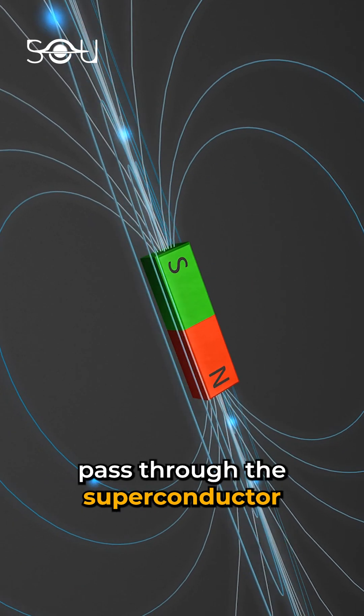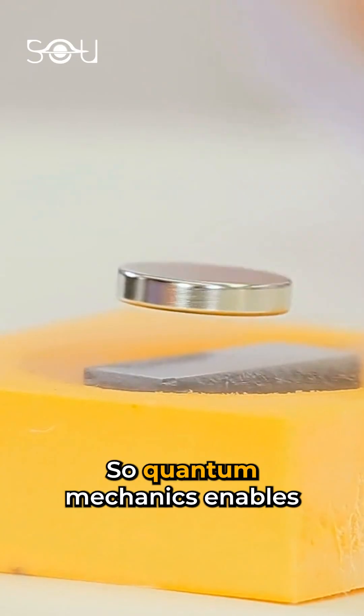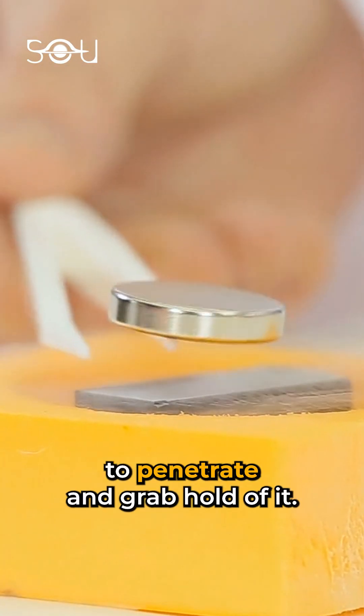However, some field lines pass through the superconductor when impurities are present. So quantum mechanics enables magnetic spikes to penetrate and grab hold of it.